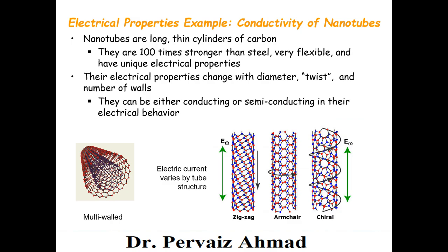What about electrical properties? Electrical properties mostly refer to conductivity. As a good example, we give nanotubes. You can see different kinds of nanotubes in the figures here — multi-walled, zigzag, armchair, and chiral. In the coming course, we will study these different kinds of nanotubes in more detail.